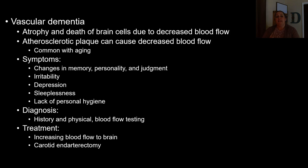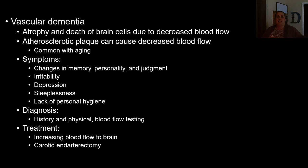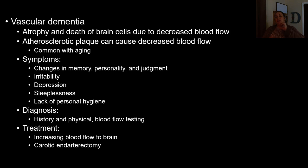Vascular dementia is the atrophy and death of brain cells due to decreased blood flow, often caused by plaque buildup from high lipid diets and cholesterol that progressively clogs vessels — a common occurrence with aging. Symptoms include changes in memory, personality, and judgment, as well as increased irritability, depression, sleeplessness, and lack of personal hygiene. Diagnosis is by history and physical exam, and treatment aims to increase blood flow to the brain, including cleaning out plaques in the carotids.